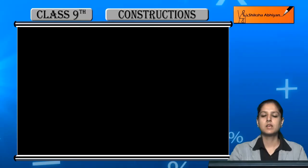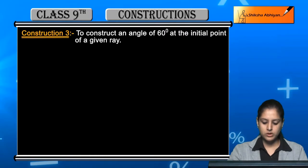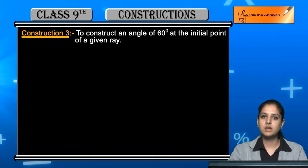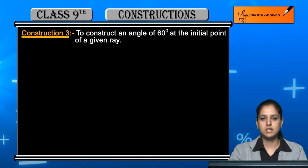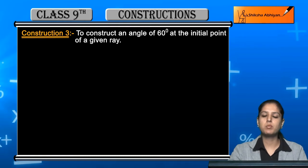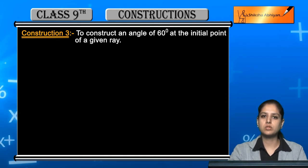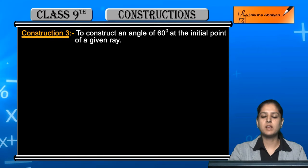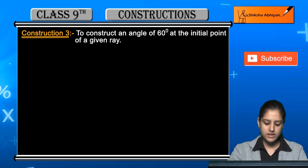Construction number three: to construct an angle of 60 degrees at the initial point of a given ray. अगर आपको एक ray already given है, उसके initial point पर आपको एक angle draw करना है 60 degree का। एक ray से आप क्या समझते हैं — जब भी हम एक ray draw करते हैं तो उसका एक fixed point होता है और दूसरी side पर एक arrow होता है। उस initial point पर आपको एक angle draw करना है of 60 degree।